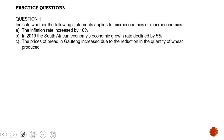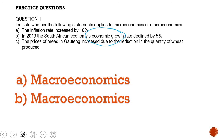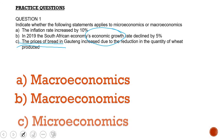Now we look at question 1, which asks us to indicate whether each statement applies to microeconomics or macroeconomics. The first statement — the inflation rate increased by 10% — relates to the entire economy, not specific products, so this is macroeconomics. The second — the South African economy's growth rate declined by 5% in 2019 — also looks at the economy as a whole, so this is macroeconomics. The third — prices of bread in Gauteng increased due to a reduction in the quantity of wheat produced — looks at a specific product, so this is microeconomics.